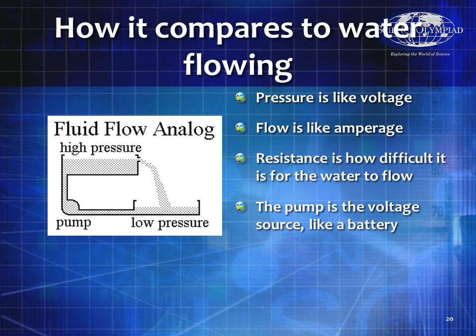A useful analogy is comparing electricity to water flowing. Think of pressure as voltage, flow as amperage, and resistance as how difficult it is for the water to flow — and the pump is like the battery. In a closed circuit, you start at low pressure, go through the battery which raises it to high pressure, then flow through a small hole. A small hole means high resistance and less current; a big hole means low resistance and more current.